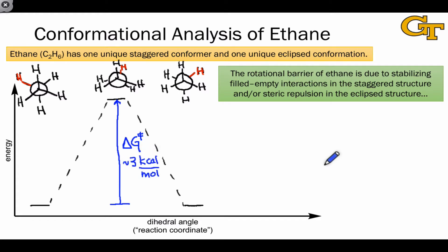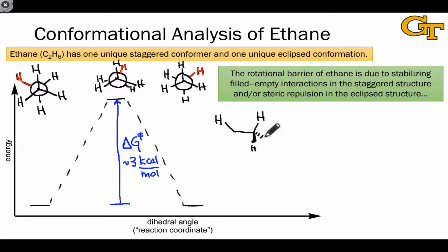Two explanations for the rotational barrier in ethane have been put forth, corresponding to the two effects we looked at in the last video. The first focuses on steric repulsion in the eclipsed structure, using the idea that because bonds are aligned, overlap between filled electron clouds is more severe in the eclipsed conformation than in the staggered conformation.